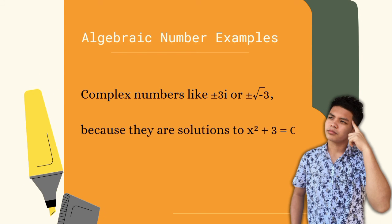Next example, we have complex numbers: ±3i, or equivalently ±√(-3). Why are these considered algebraic numbers? It is because they are solutions to x² + 3 = 0.